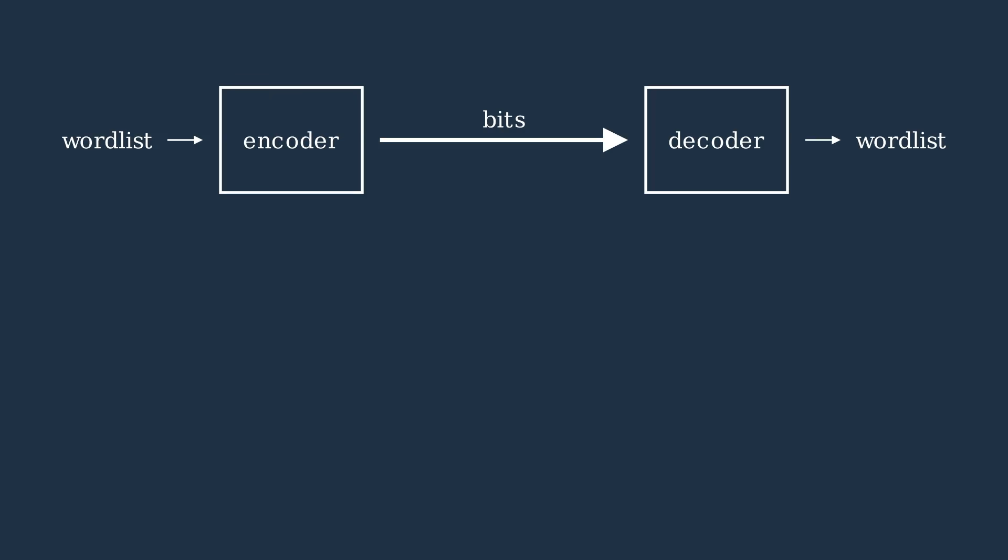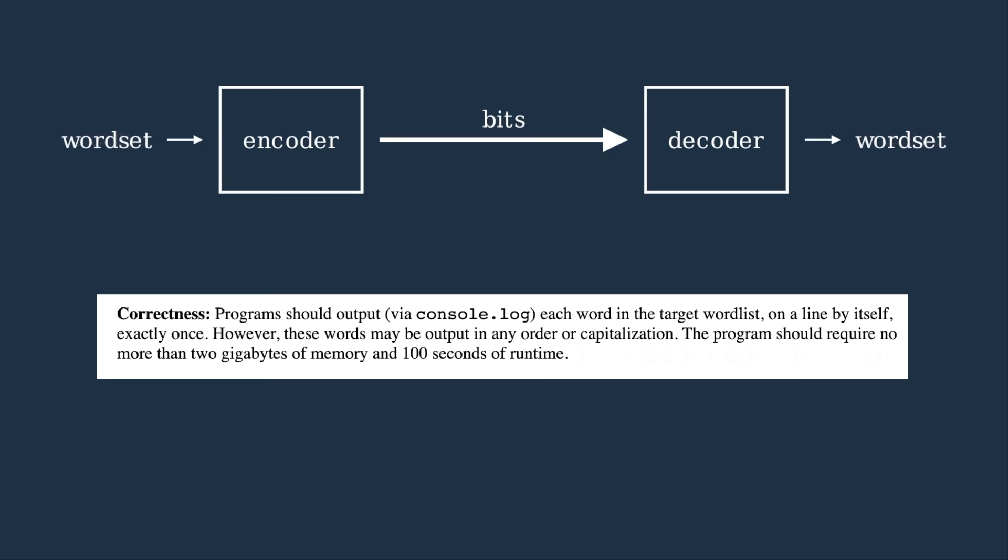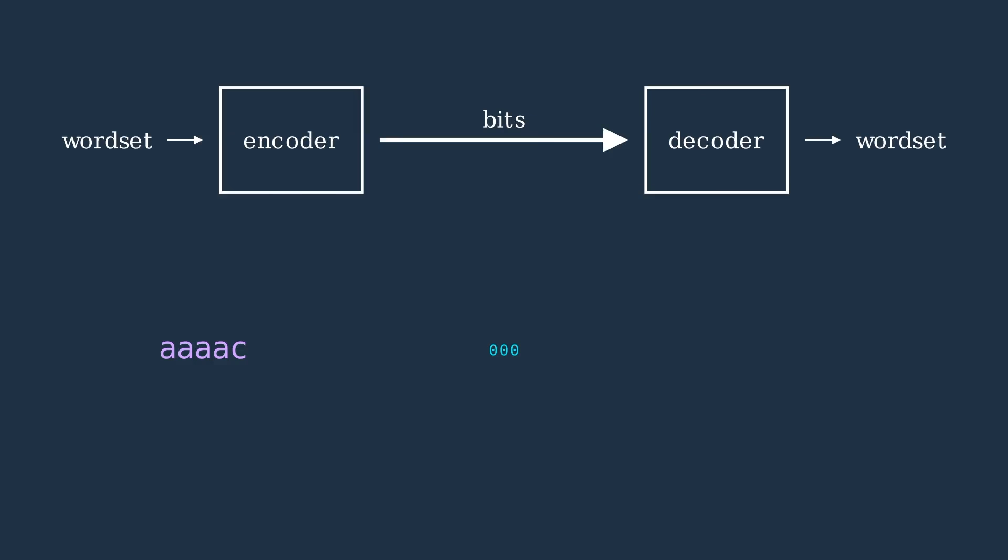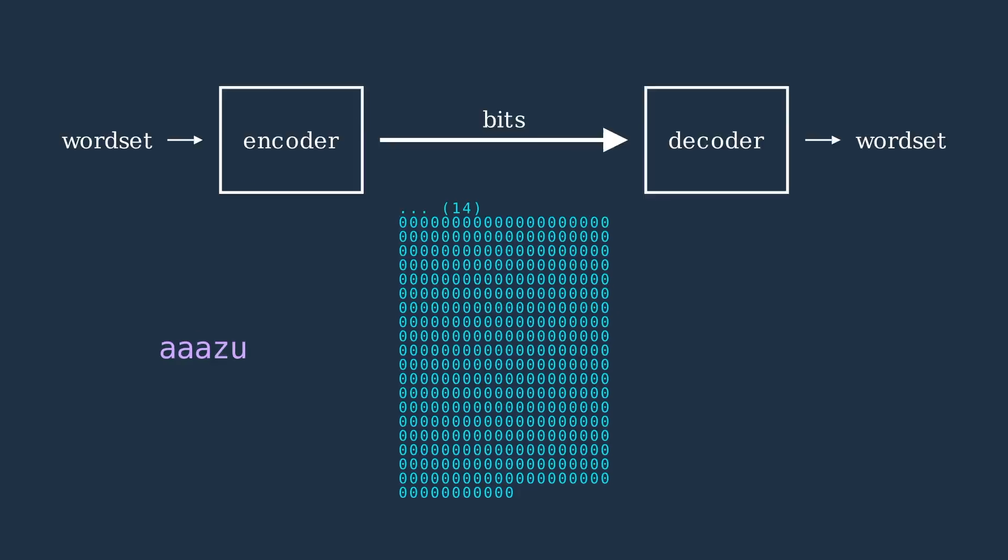Actually, we should be saying wordset rather than wordlist, because by the official rules of golf.horse, order does not matter. One straightforward way of encoding a wordset is to iterate alphabetically through all possible strings and to emit a 1 or 0 for each, depending on whether it's in the wordset or not. This gives us 26 to the 5th power bits, one for each string of length 5.